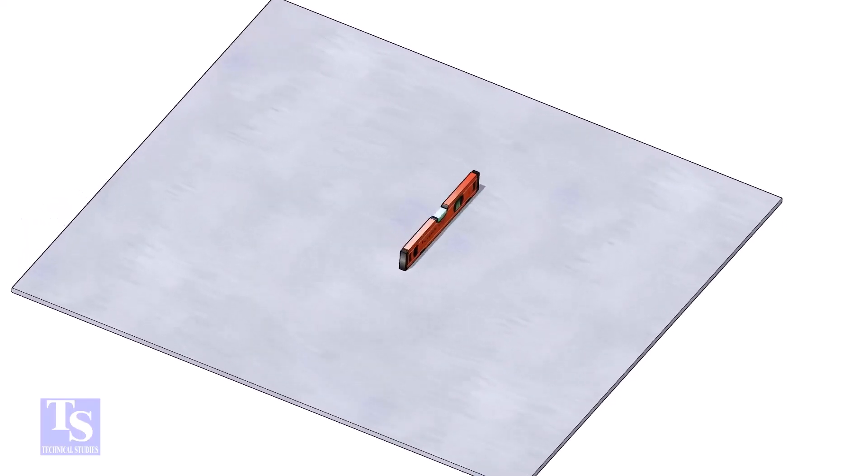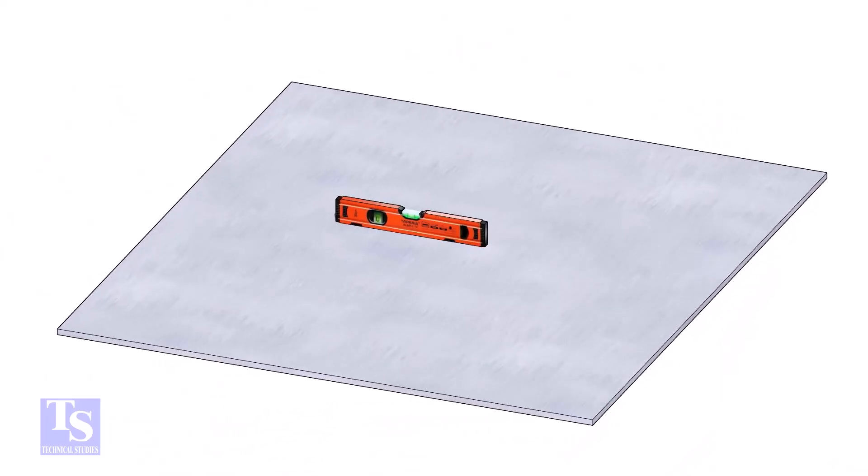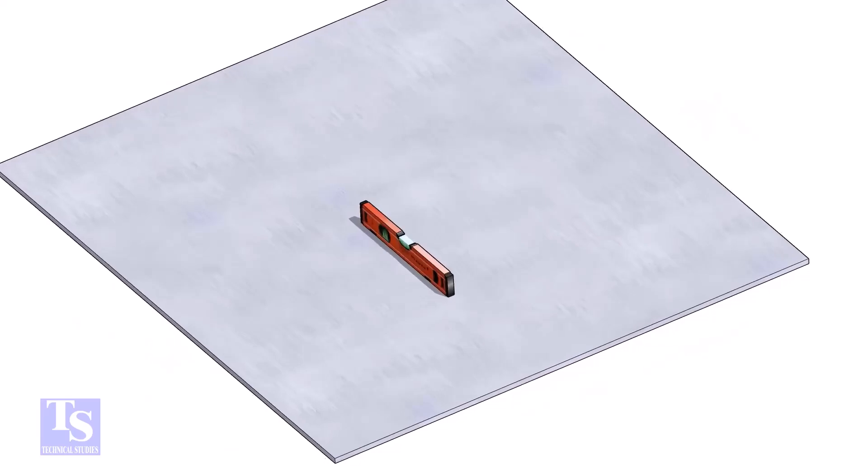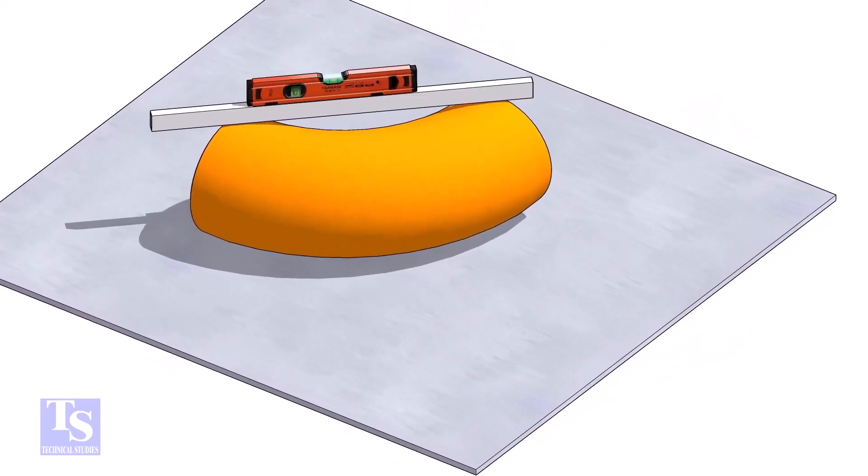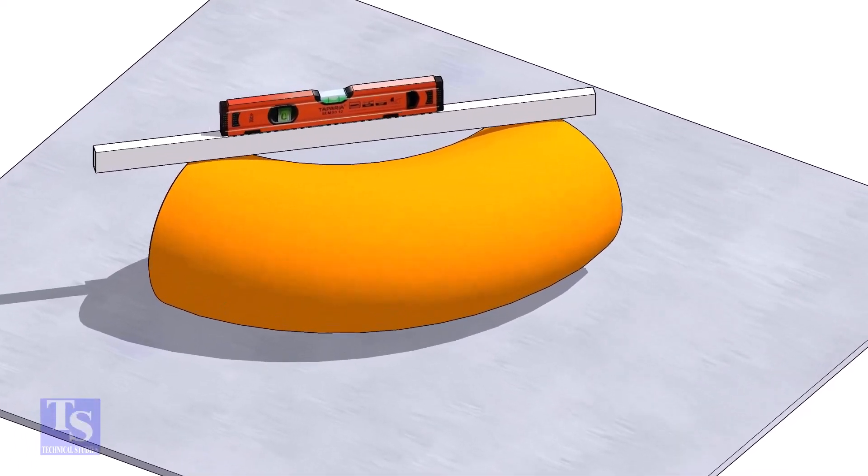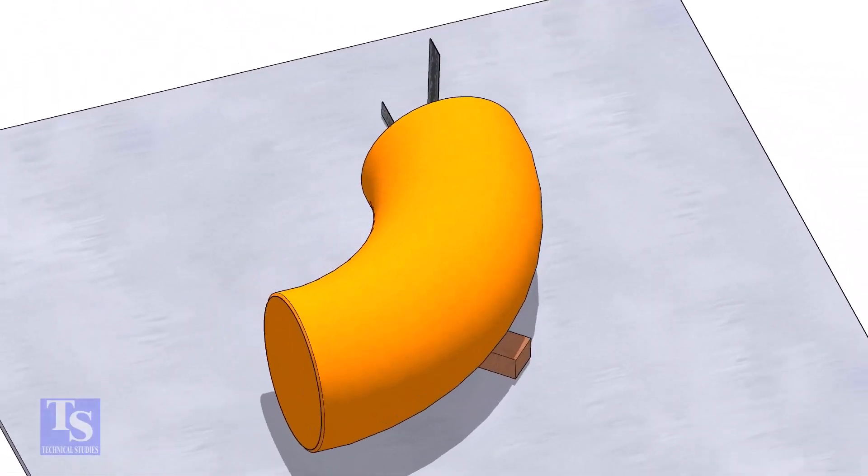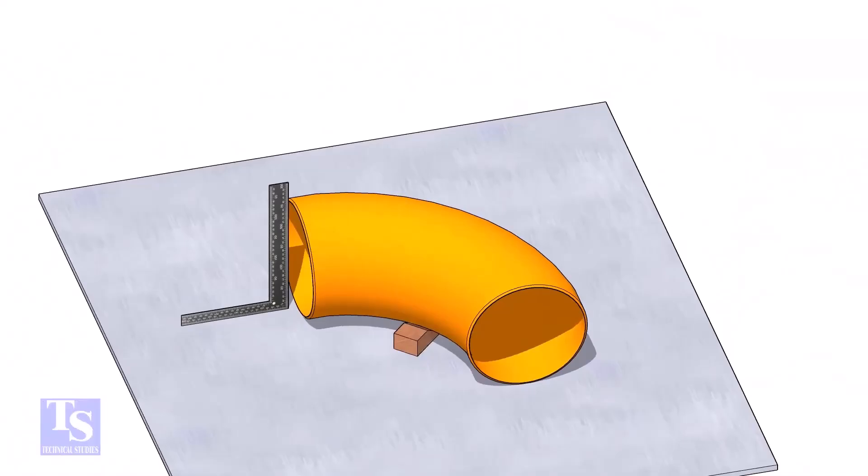Let us mark the center of the elbow. Choose a leveled plate and put the elbow on it. Check the level of the elbow. Check the squareness of the face of the elbow with the plate. If necessary, put some packing below as shown.